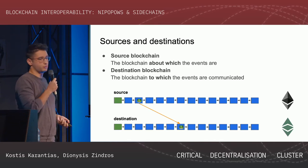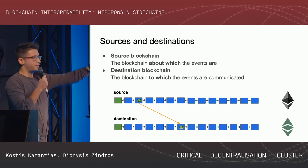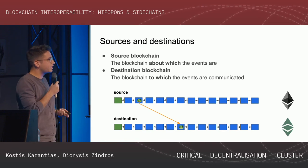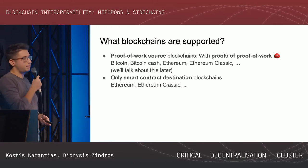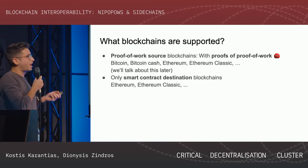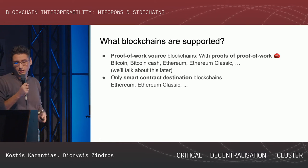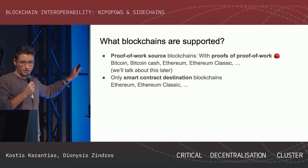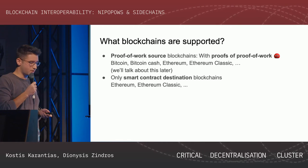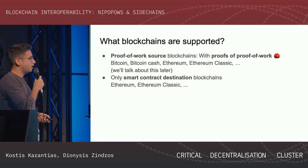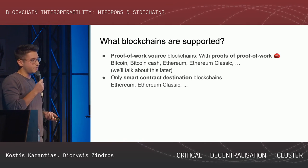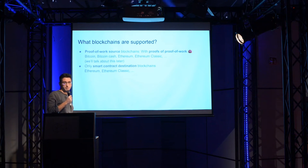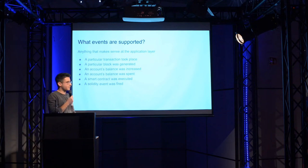Some terminology: Ethereum is the source chain — the chain where the event originates — and Ethereum Classic is the destination or target chain. We require the blockchains to be proof of work, though it's not a strict requirement; that's just the case we look at today. We also require that cryptocurrencies support smart contracts for the more advanced things we want to do. This is a departure from the previous talks about Monero, which doesn't really have smart contract capabilities.